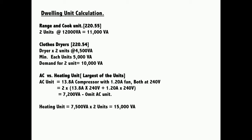For clothes dryers, according to Article 220.54, the minimum load to take into consideration is 5,000 VA. We have one unit at 4,500 VA, so we should apply the minimum requirement per demand for each dryer unit. Therefore, for two units we would have a demand of 10,000 VA.